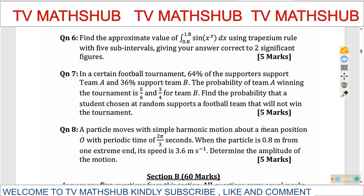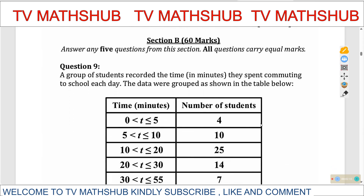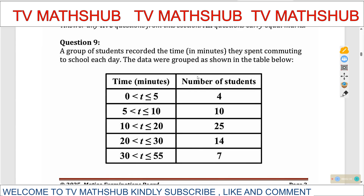Each of the eight questions in Section A takes five marks, which will give you 40 marks from Section A. Moving through Section B, in this section you are supposed to attempt only five questions, and each of the questions will be carrying equal marks — that is 12 marks for each question, which will give you 60 marks for all five questions. This is question number nine.